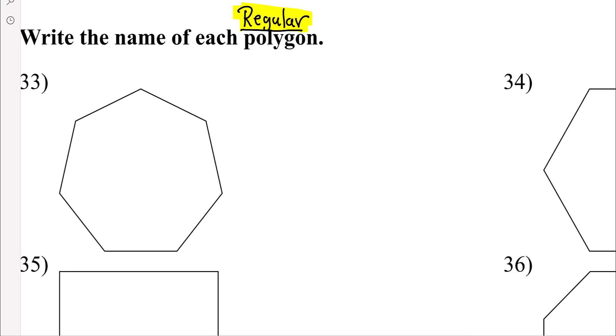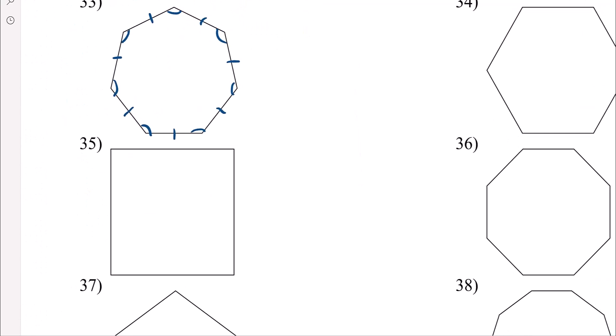Whenever you see the word regular, it means within the shape, not only are each of the sides the same measure, but each of the interior angles are the same measure of a regular polygon. So, for example, for a four-sided regular polygon, that would have to be the square. Because the square is the only one, well, all four sides are the same, and all four angles measure 90 degrees.